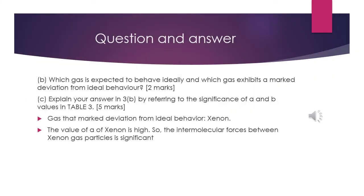The gas that shows marked deviation from ideal behaviour in question B is xenon. The reason for question C is that the value of A for xenon is high, so the intermolecular forces between xenon particles are significant. Therefore, even though the volume may be low, xenon is not expected to behave ideally because the intermolecular forces are high.